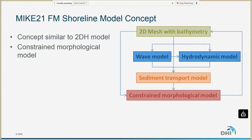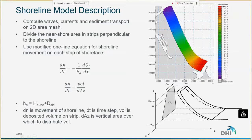What the Mike 21 flexible mesh shoreline model does is bridge the gap between these two models. The concept is similar to a 2D depth-integrated model with a 2D mesh, bathymetry, wave model, hydrodynamic model, and sediment transport model. The main difference is that we are constraining the morphology in the shoreline model by pre-describing what the coastal profiles should look like. By pre-describing the coastal profile, we don't have to worry about cross-shore processes not being accurate enough over long timescales, so we can run the model for a long time.